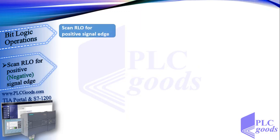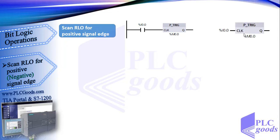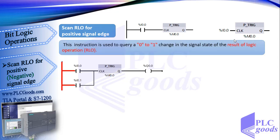Now I want to explain an instruction which scans RLO for positive signal edge. This is its ladder symbol. Unlike the previous instruction, this one only needs a memory address to work correctly. This is its FBD symbol. This instruction is used to query a zero-to-one change in the signal state of the result of logic operation — the RLO. So when either I0.0 or I0.1 is activated, the RLO changes from 0 to 1.